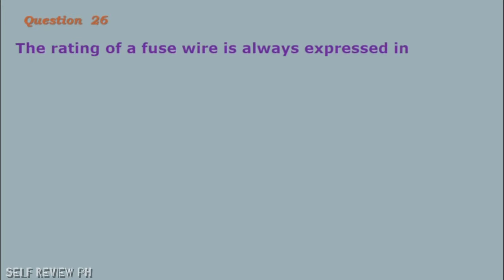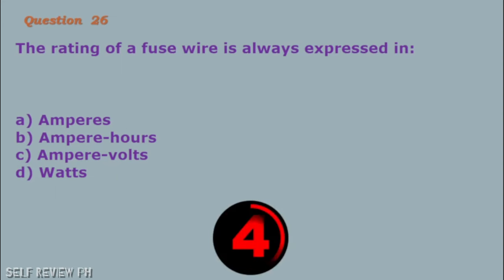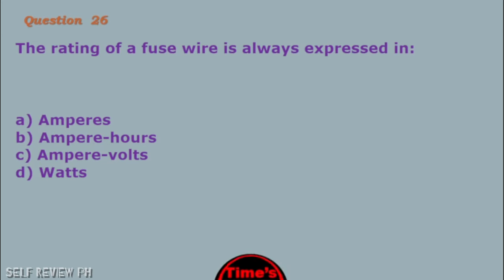Question number 26: The rating of a fuse wire is always expressed in: A. Amperes B. Ampere hours C. Ampere volts D. Watts. The correct answer is letter A, amperes.